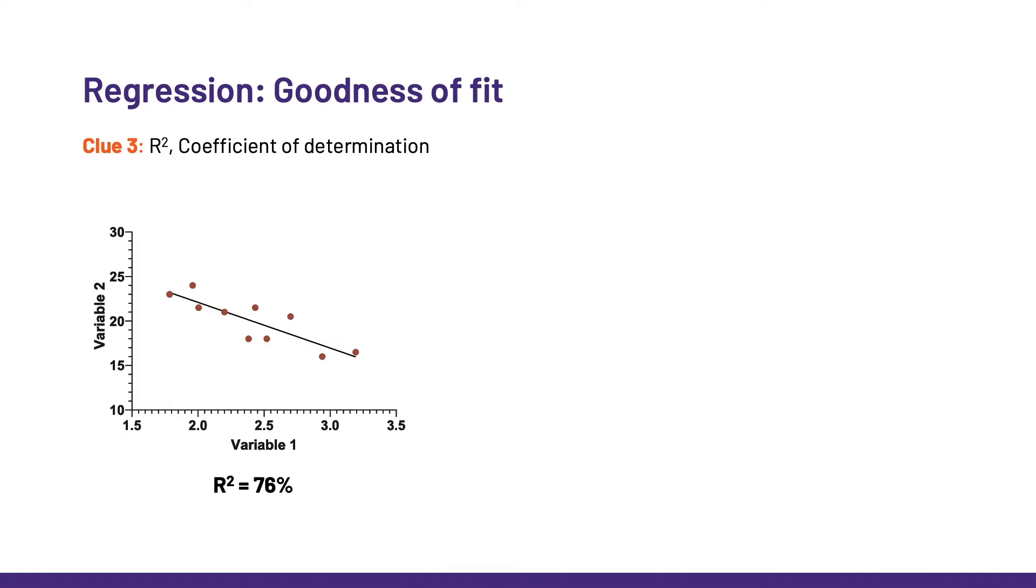Now, what about this data? We still have an idea of a negative relationship between the two variables, but not as strong. And that's confirmed with R squared, which this time is only 46 percent. And again, it makes sense as we can see that there is more to variable two than its relationship to variable one. I explain how R squared is calculated, by the way, in the video on regression with two predictors.